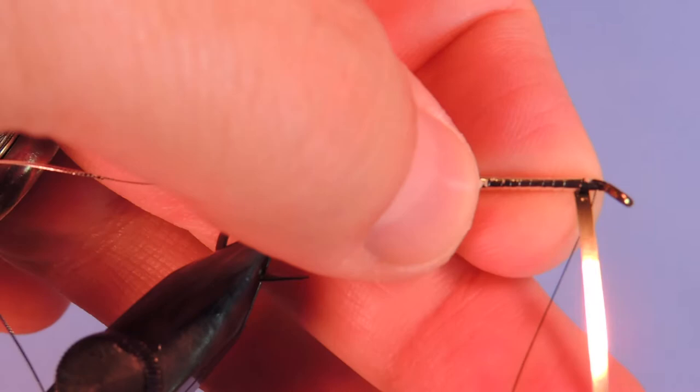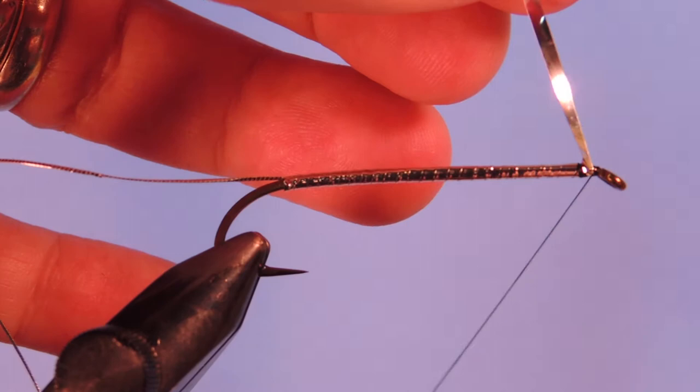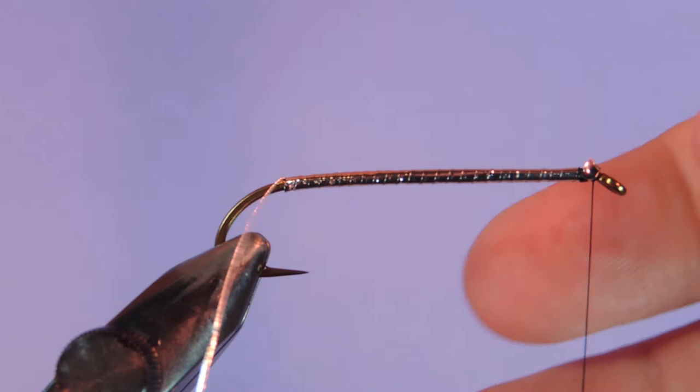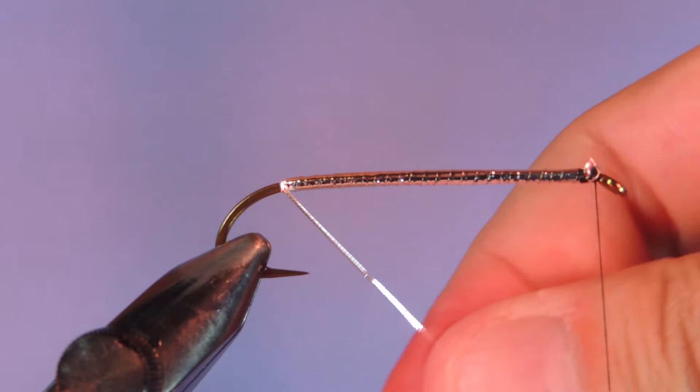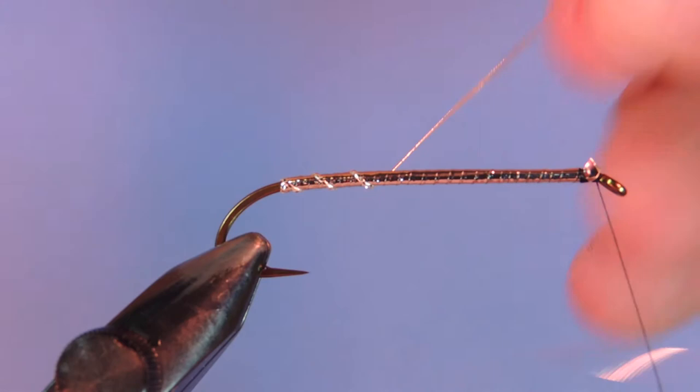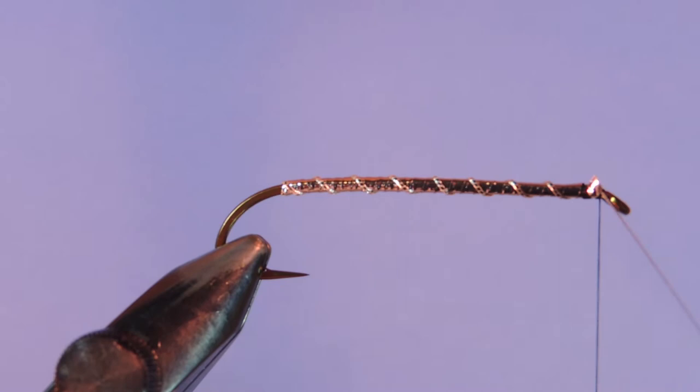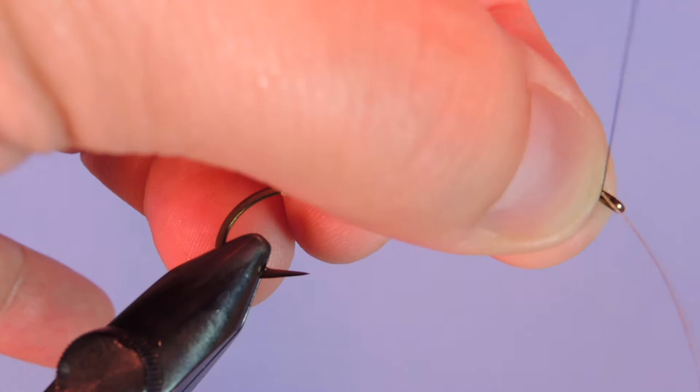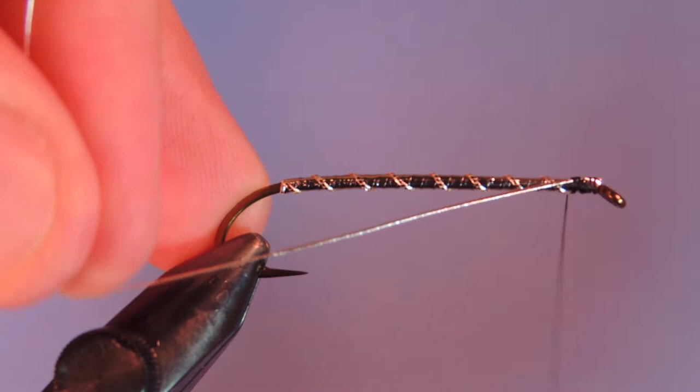Alright. Just use your finger to hold that in place. And we'll add a couple wraps to secure the tinsel. Trim that away. And then I like to reverse wrap the oval tinsel and just do that in open loops up the hook shank. We'll just secure that. Give it a trim.